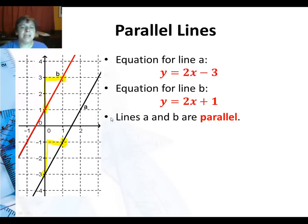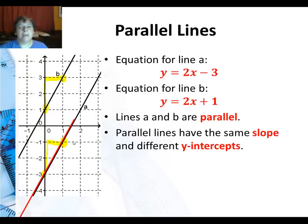So lines A and B are parallel. You can see if I move one of the lines over the other, I just slid straight down. It really was parallel. Parallel lines have the same slope but different y-intercepts. If they have the same y-intercept, then they have the same line, and that doesn't count for parallel.